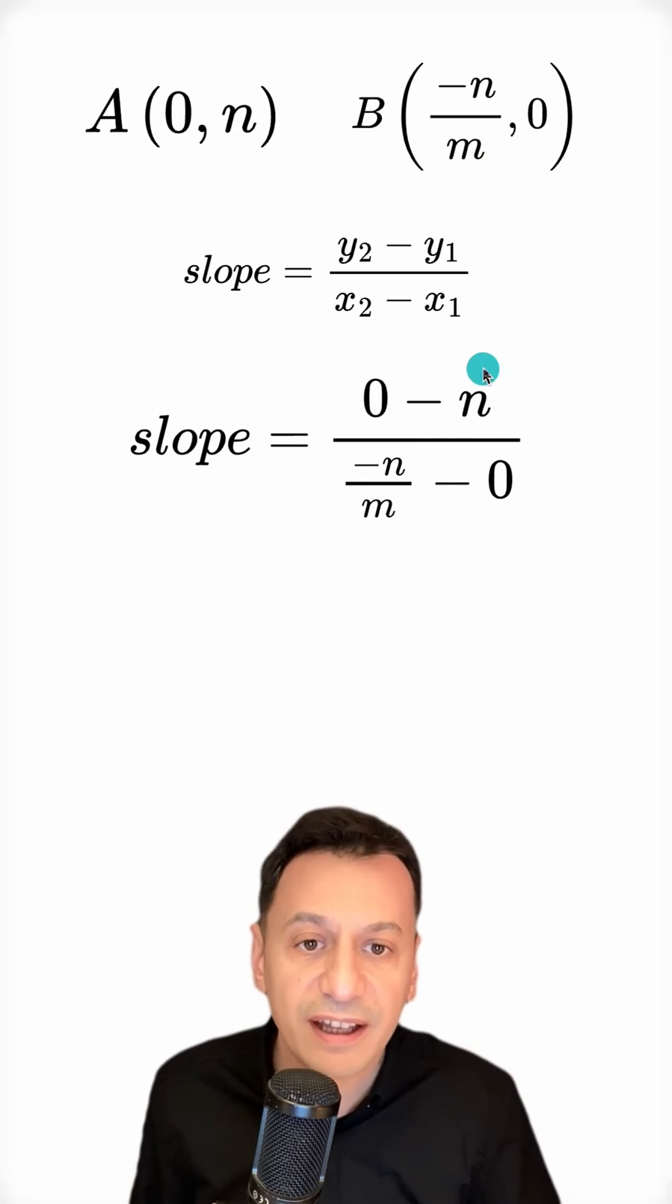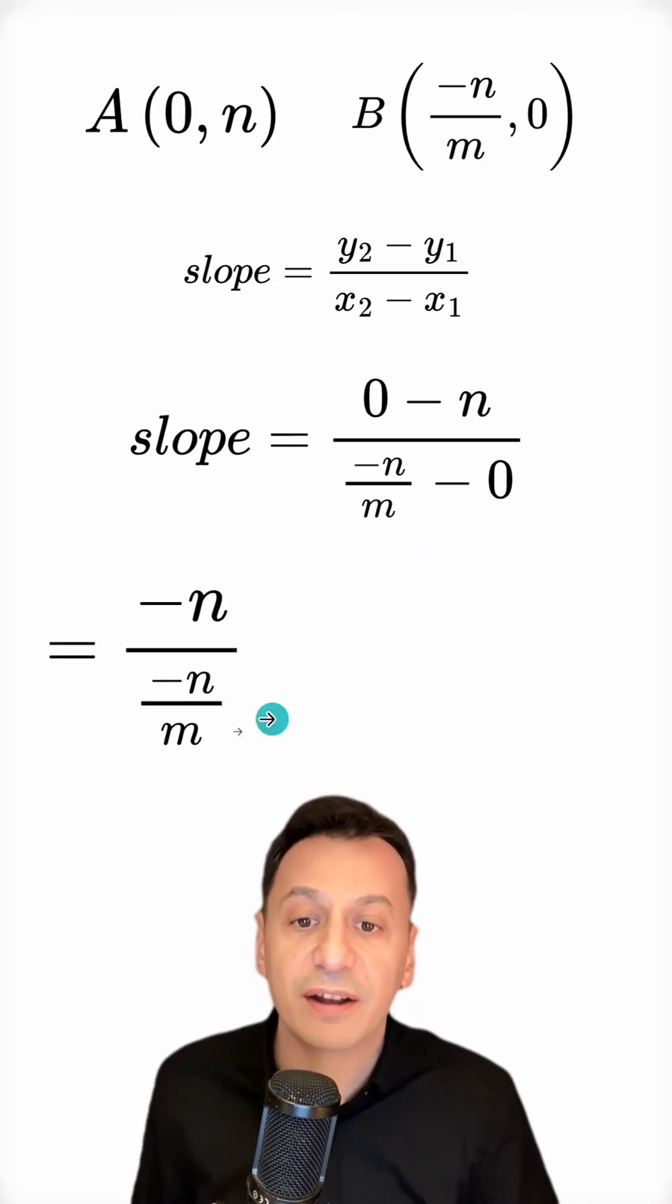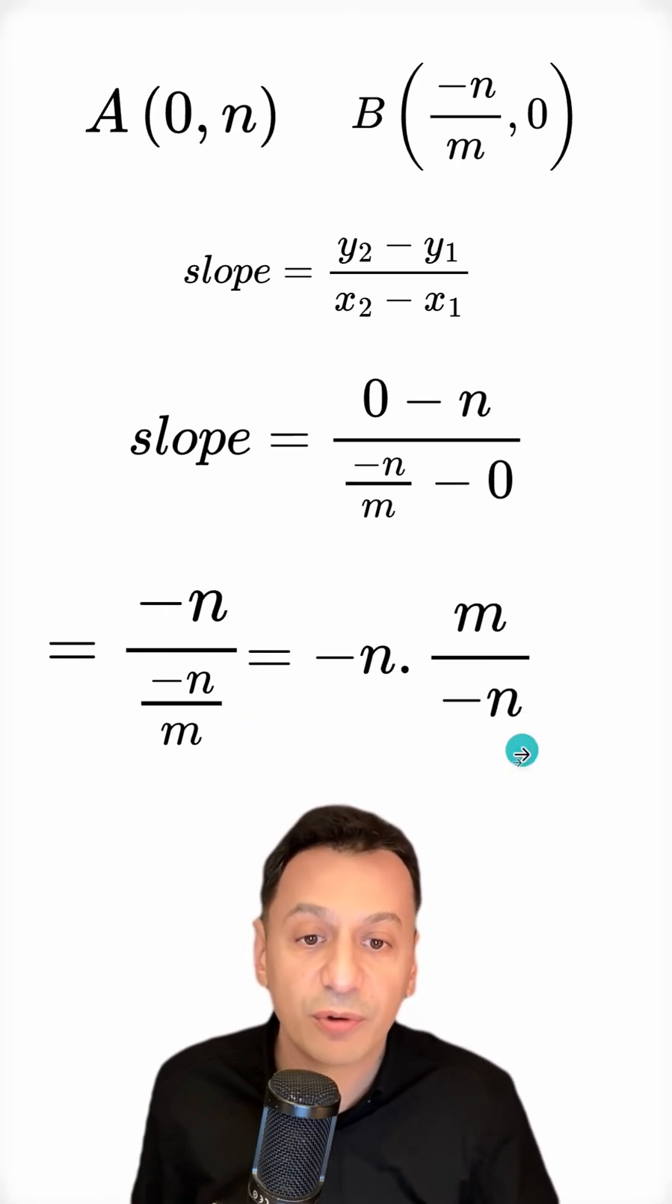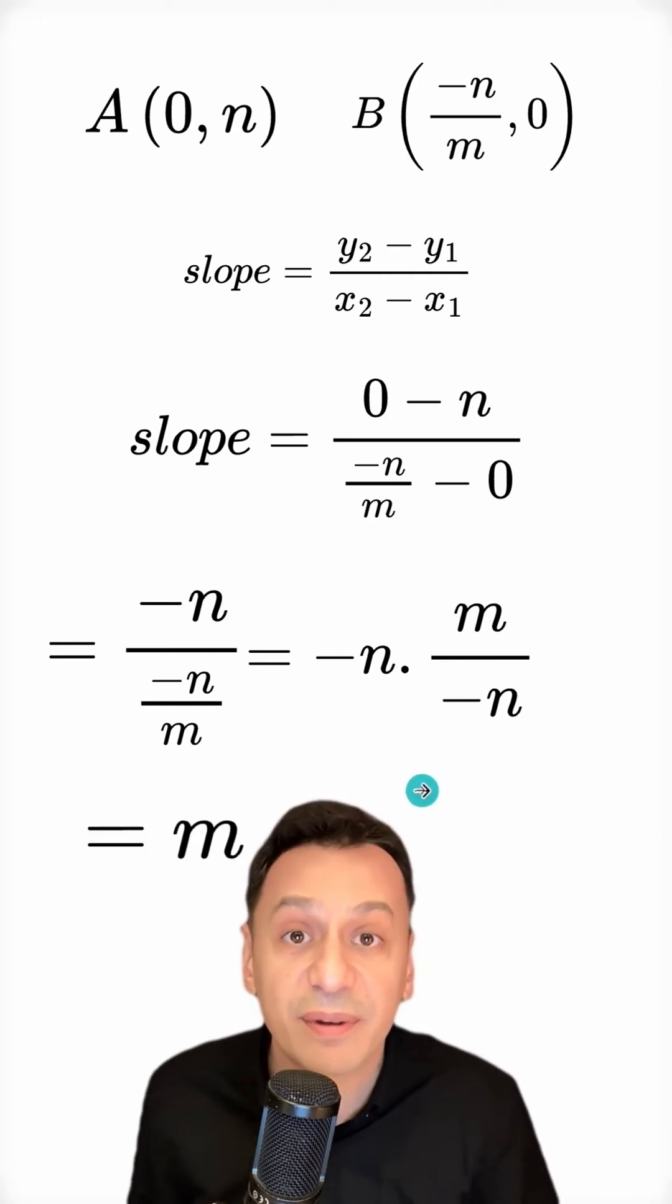The numerator will be minus n, and the denominator will be minus n over m. After this, I write the numerator as it is, and multiply by the reciprocal of the denominator. The negative n's cancel each other out, and thus I find the slope as m.